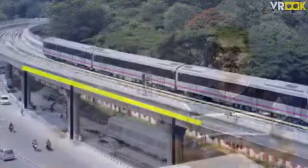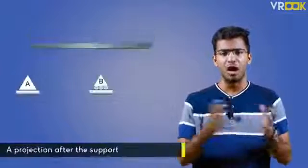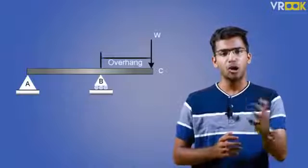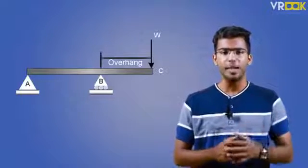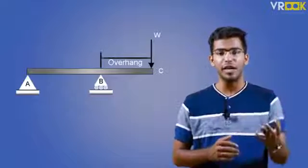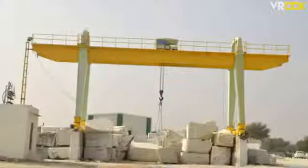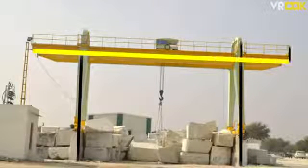The next type is overhanging beam. A beam which has projection after the support is called overhanging beam. The projection is called the overhang span. It has two supports and the span can be projected on either end or one side of a beam. Best example would be a marble lifting crane where we have a span of beam after the supports.